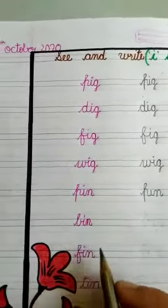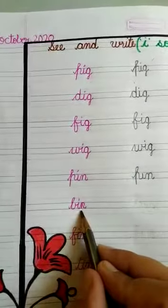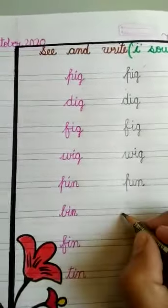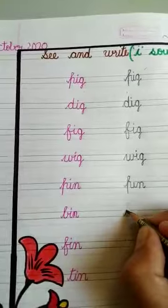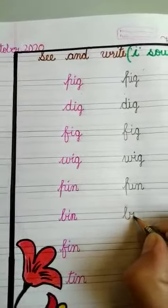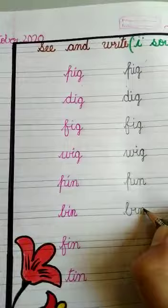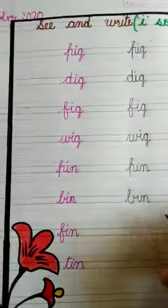Next: ba, in — bin. Write down: ba, in, bin.